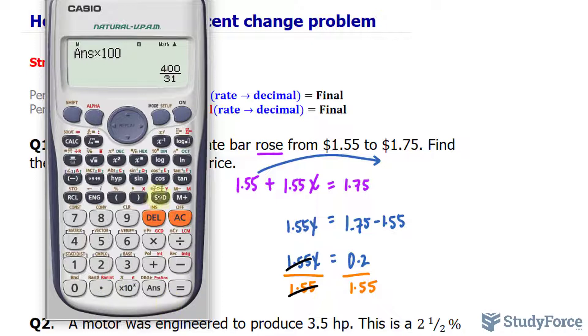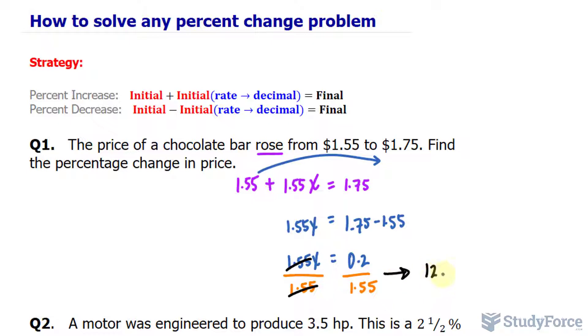And you end up getting 12.9%. So, 12.9% increase is what occurred when it went from $1.55 to $1.75.